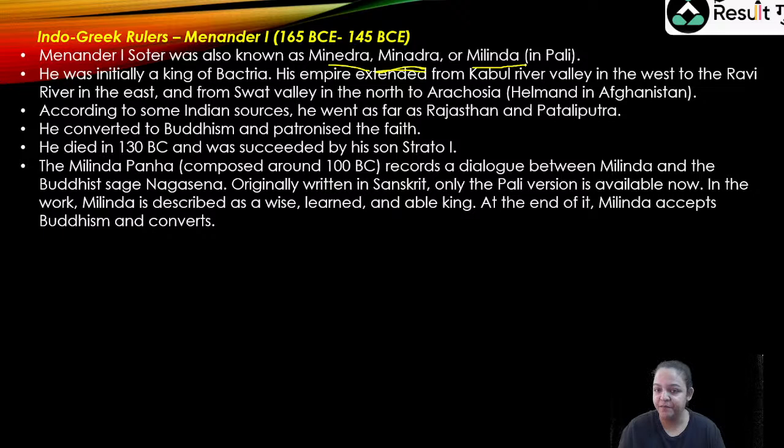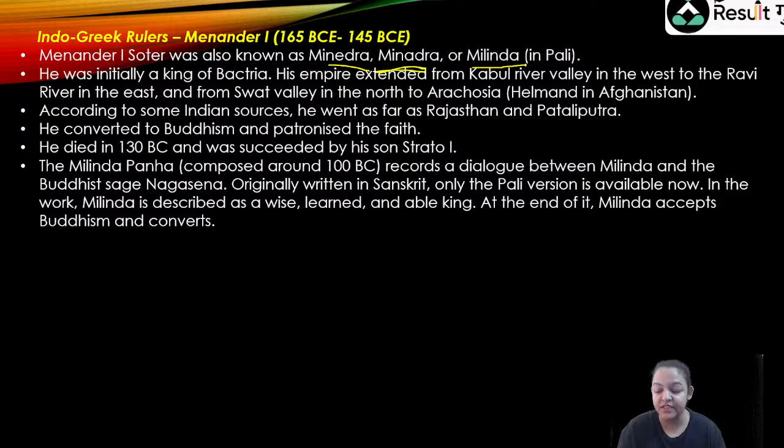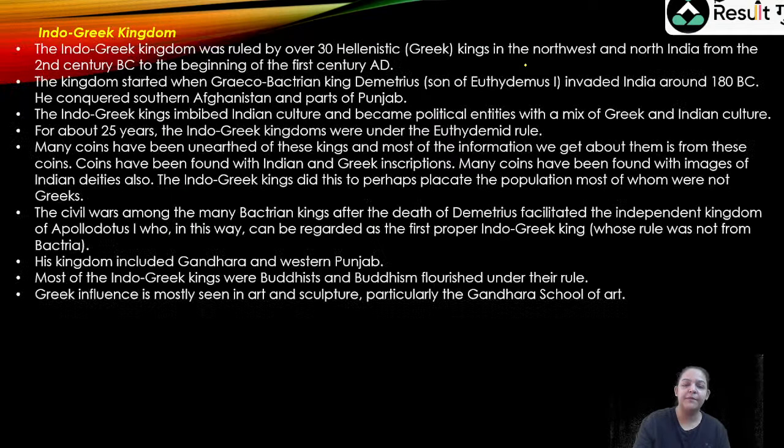Menander converted to Buddhism and patronized the faith. He died in 130 BC and was succeeded by his son Strato I. The Milindapanha is a dialogue between Milinda and the Buddhist saint Nagasena — originally written in Sanskrit, though only the Pali version is now available. In this work, Milinda is described as a wise and learned king, and at the end he accepts and converts to Buddhism.